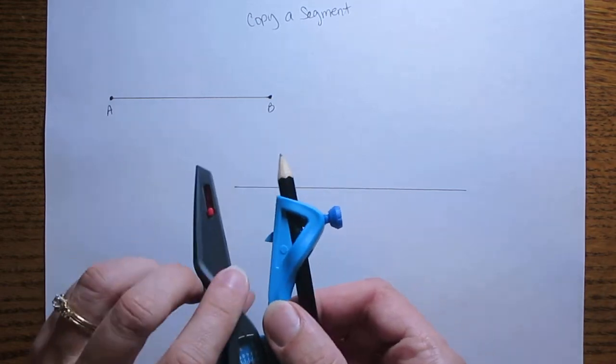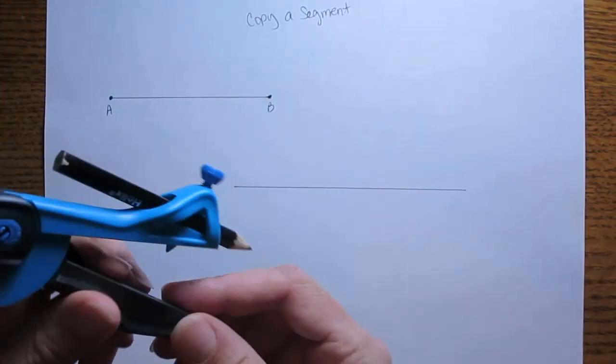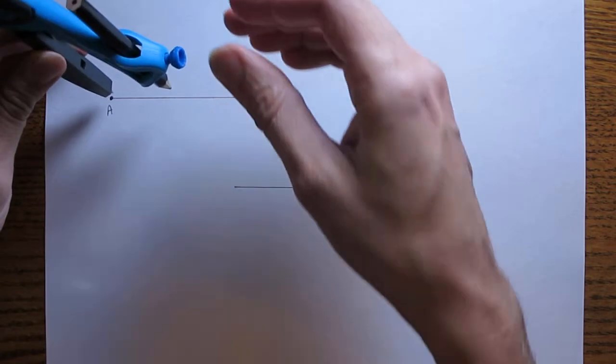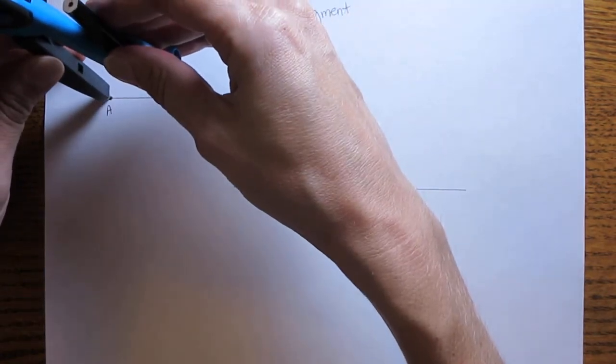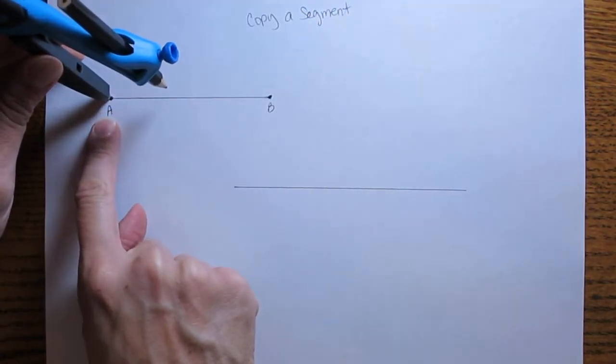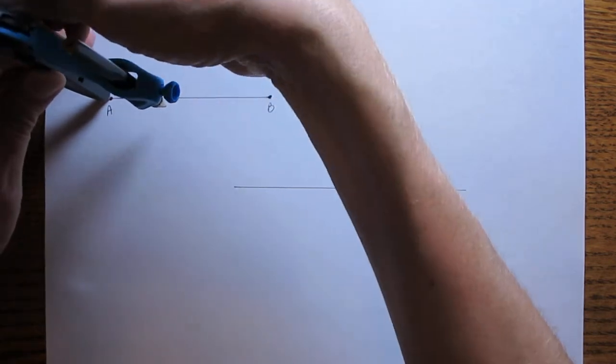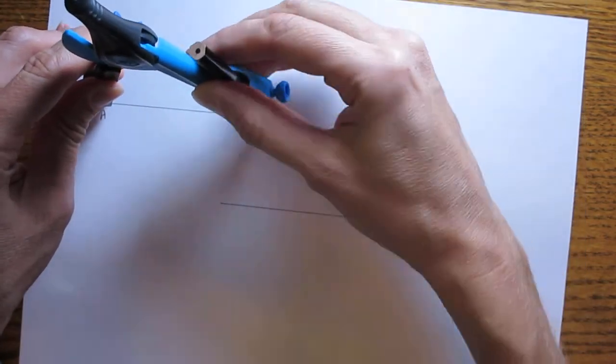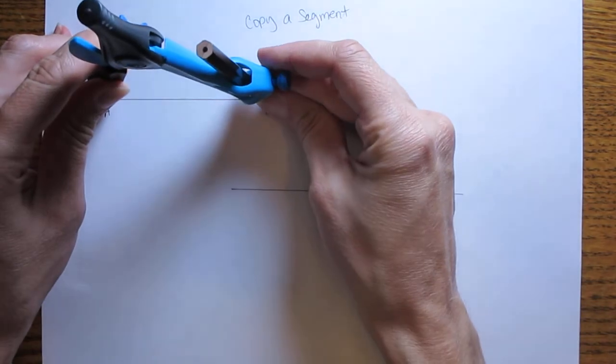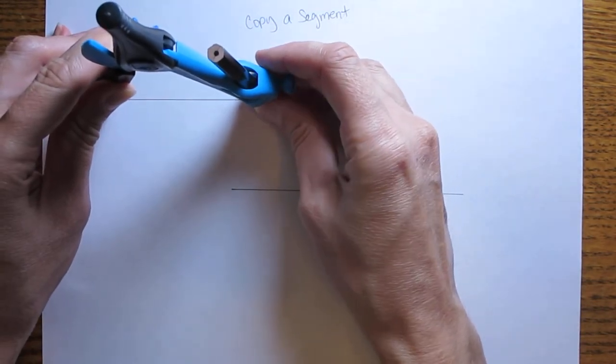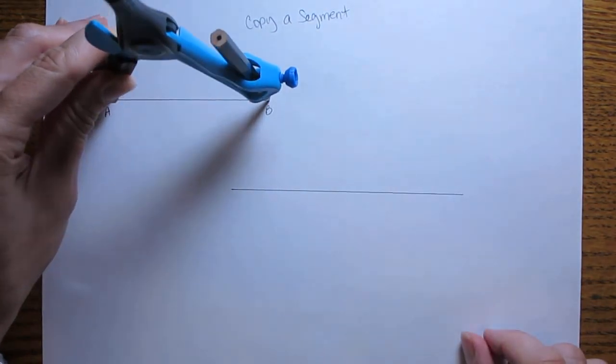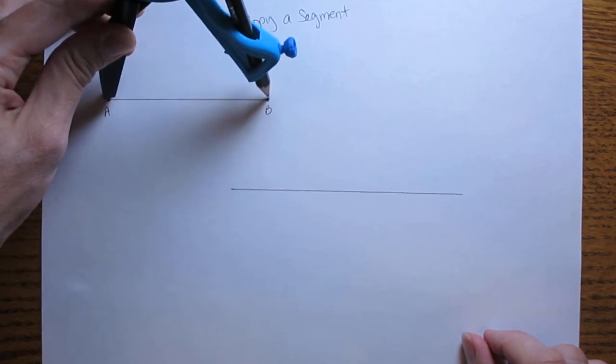Then you're going to take your compass and put the pointed end down on one of the endpoints of your original segment. Open up your compass to match the width of your segment so that it matches that width.